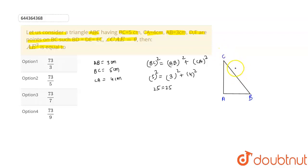So it is given that BC is 5 cm, AB is 3 cm and AC is 4 cm. Now here the question says that D, E are points on BC such that, so let's plot the point, this is our point D and this is our point E.